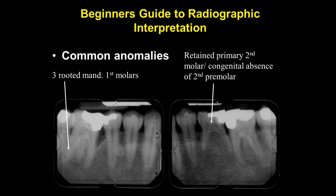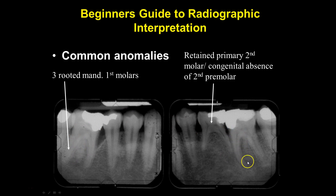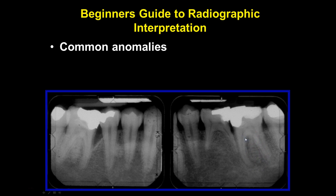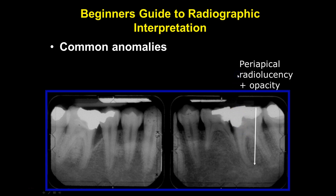Three-rooted first molar — and notice these are mirror images. See how distorted this looks? This looks like a malformed tooth, possibly a third root on this tooth as well. Those are very unusual findings.